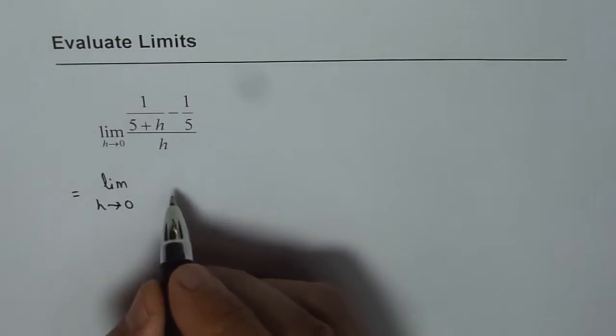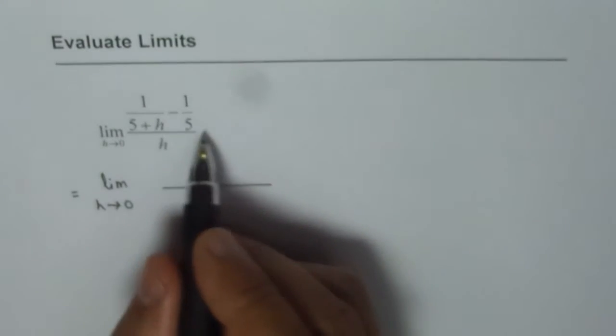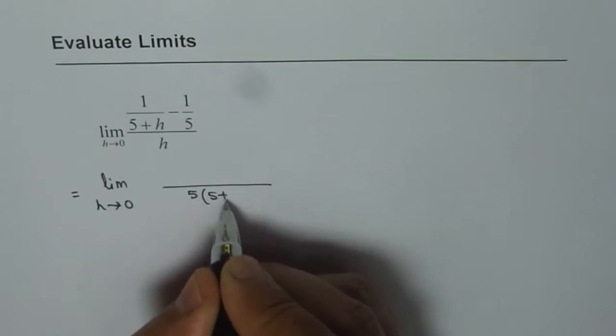Now we have a common denominator of 5 times (5+h). To subtract, we have to have a common denominator. So we have 5 times (5+h).